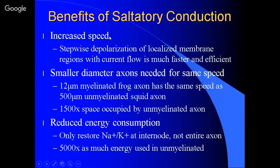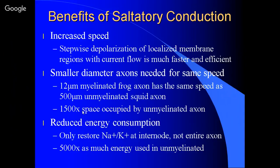Why do that? Because the combination of speed and efficiency is incredible. A smaller diameter axon is needed for the same speed. Think about the central nervous system for a second — a hundred billion neurons having to communicate with one another inside a closed box that's less than one and a half liters. A 12-micron myelinated frog axon has the same speed as a 500-micron diameter unmyelinated squid axon. Because this is a diameter, the volume is reduced 1,500-fold — more than three orders of magnitude reduction.